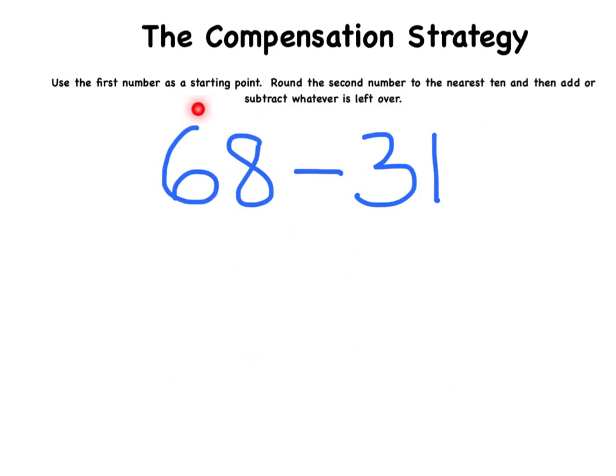So as with before I'm going to use my first number as my starting point. So I'm going to start with 68. Now working out what I need to take away first, I'm going to round this number to the nearest 10. This time I'm going to round down to 30.